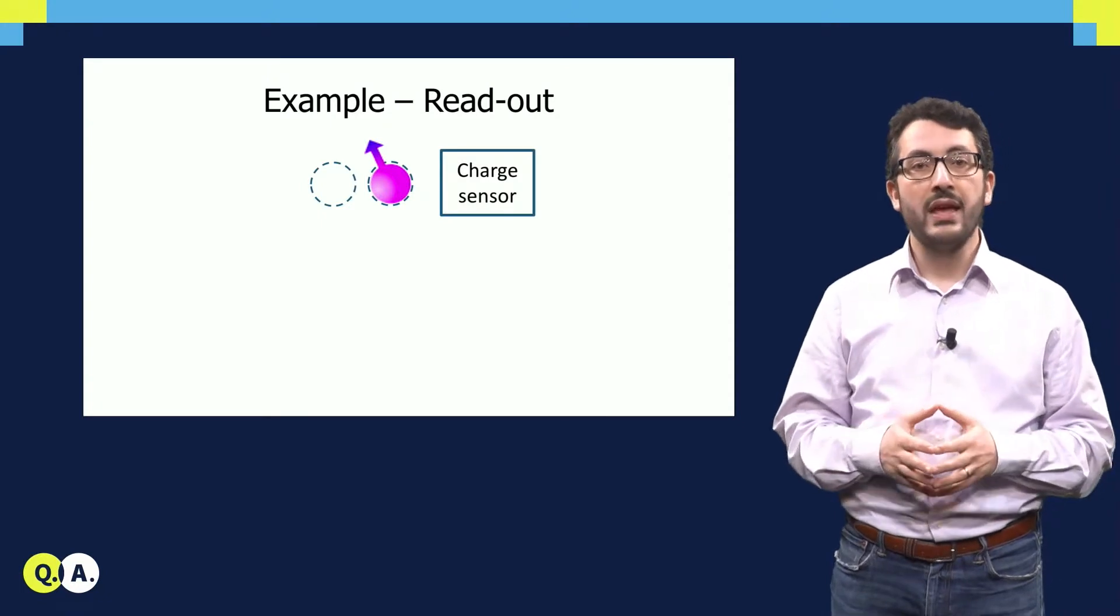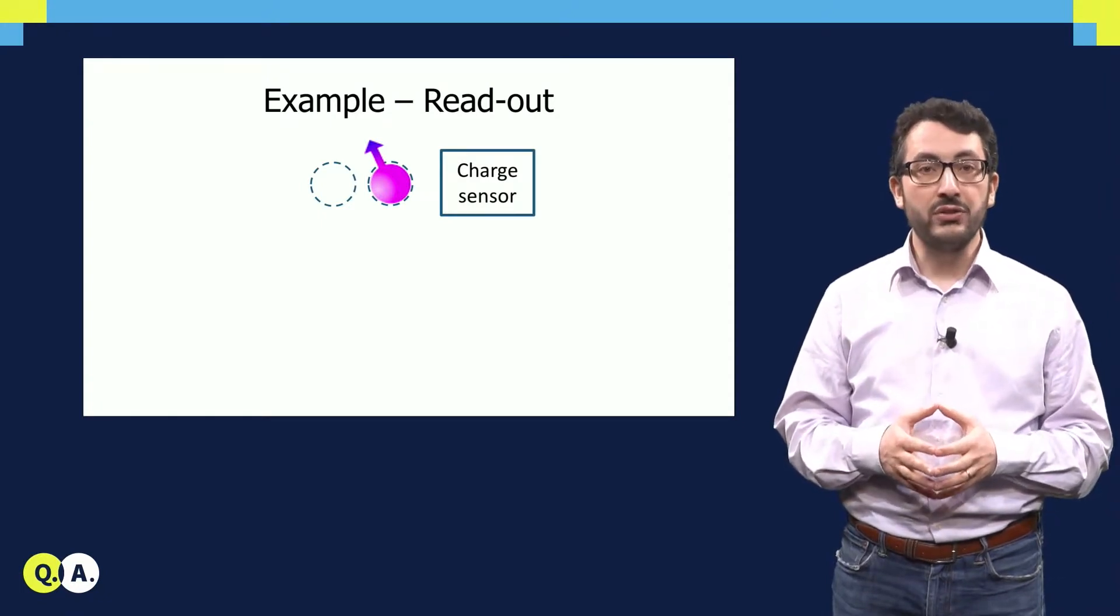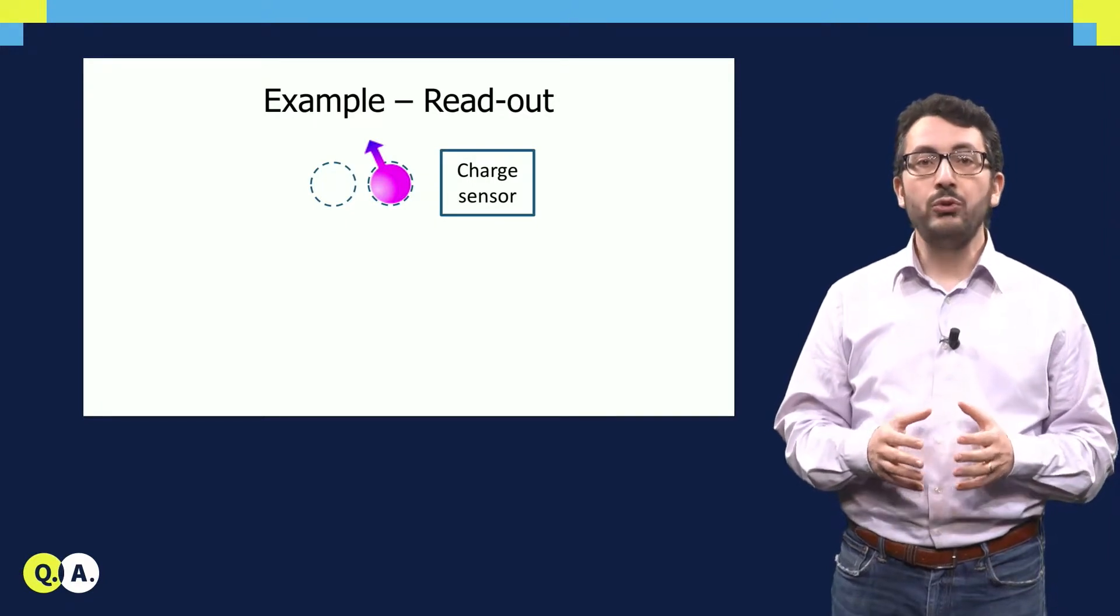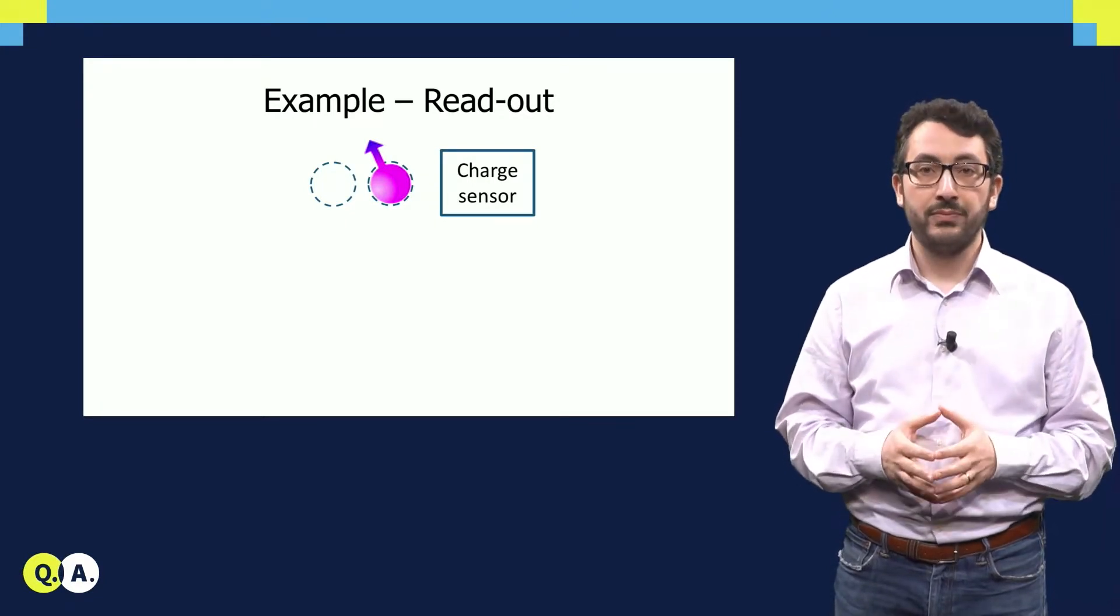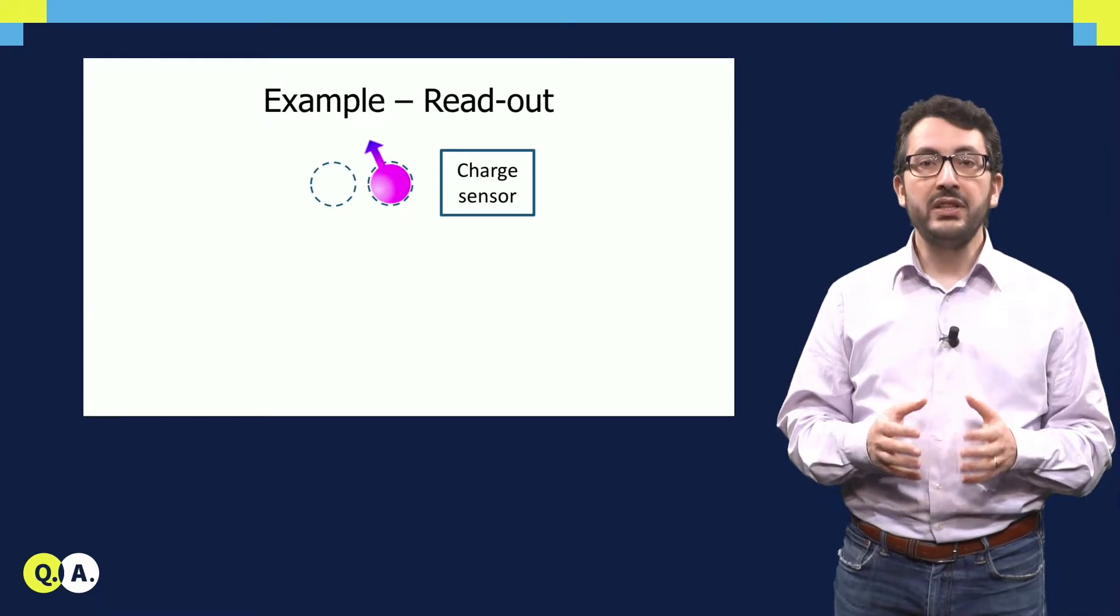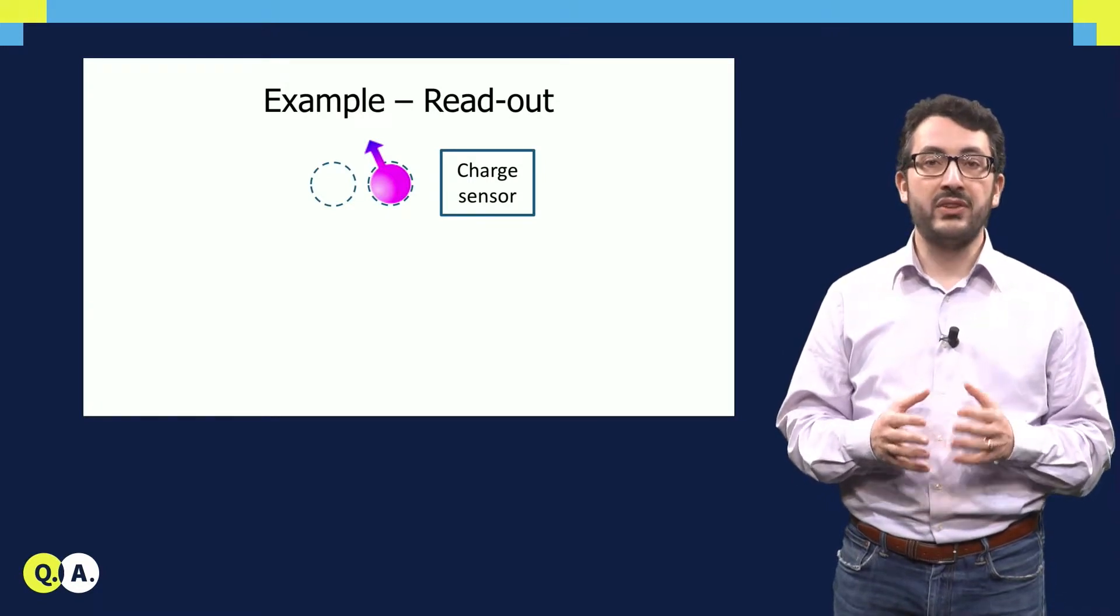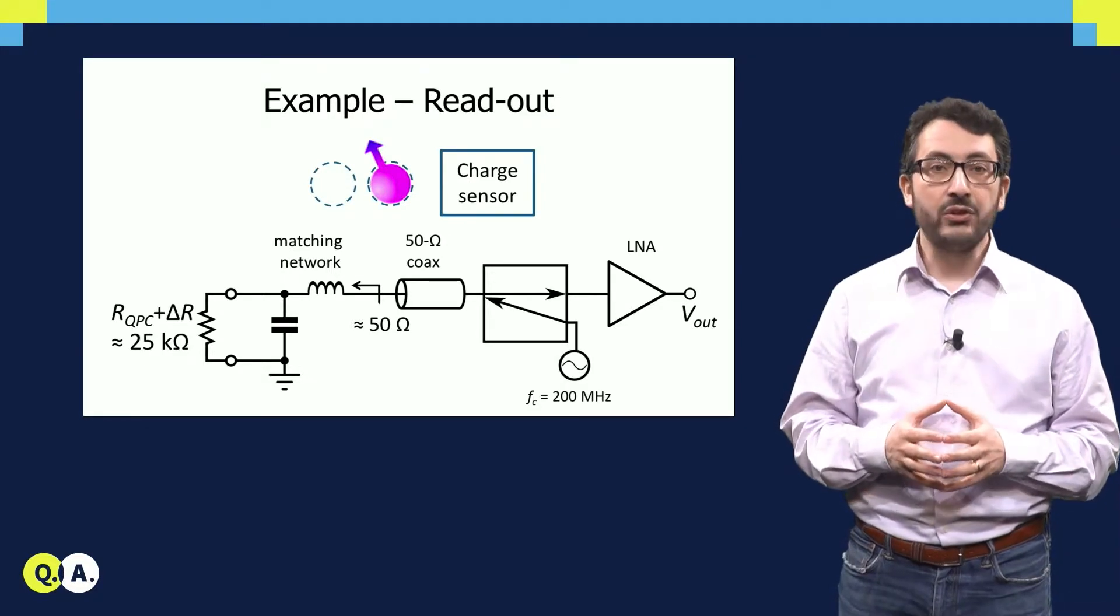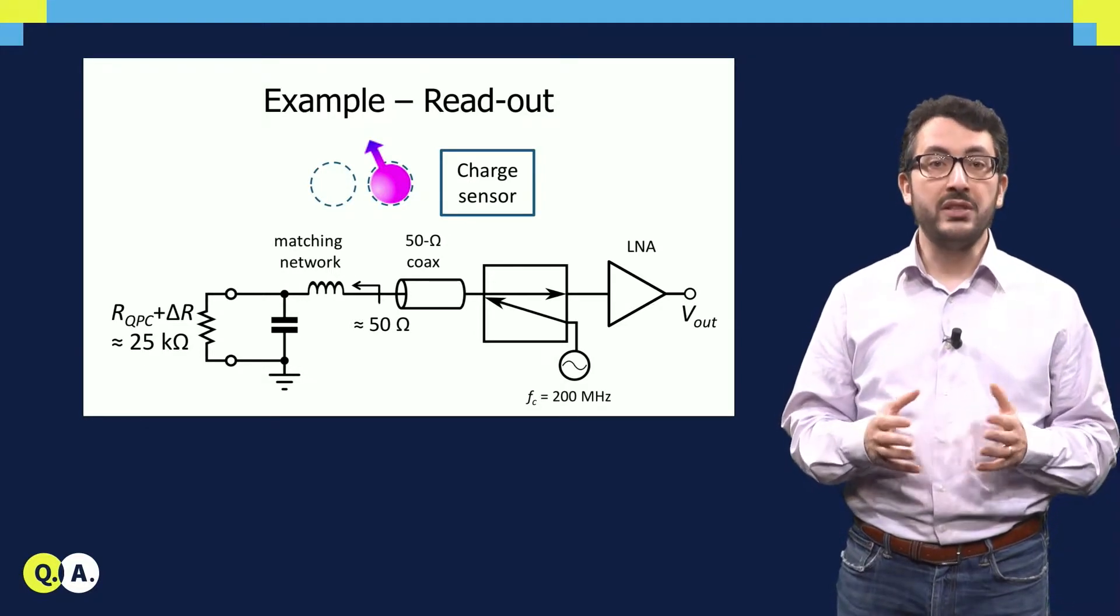That change in position can be sensed by a charge sensor next to the qubit. Now, how do we read this charge sensor? Basically, we read the charge sensor by reading its resistance.